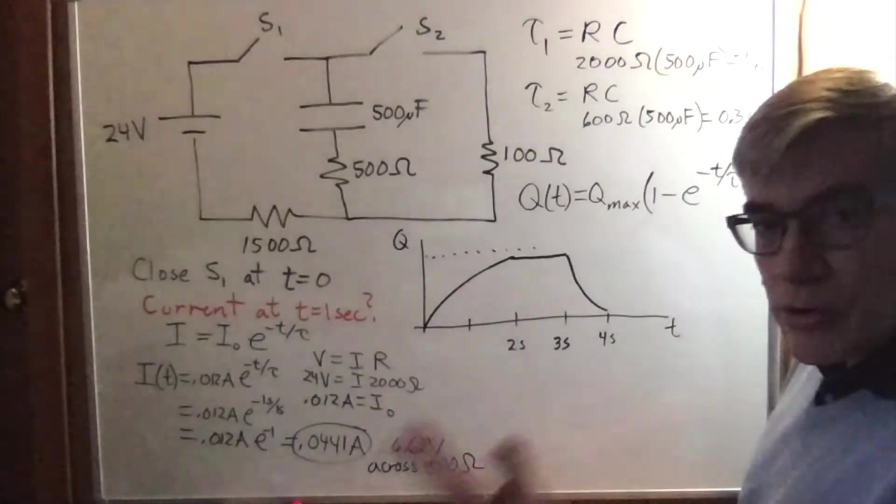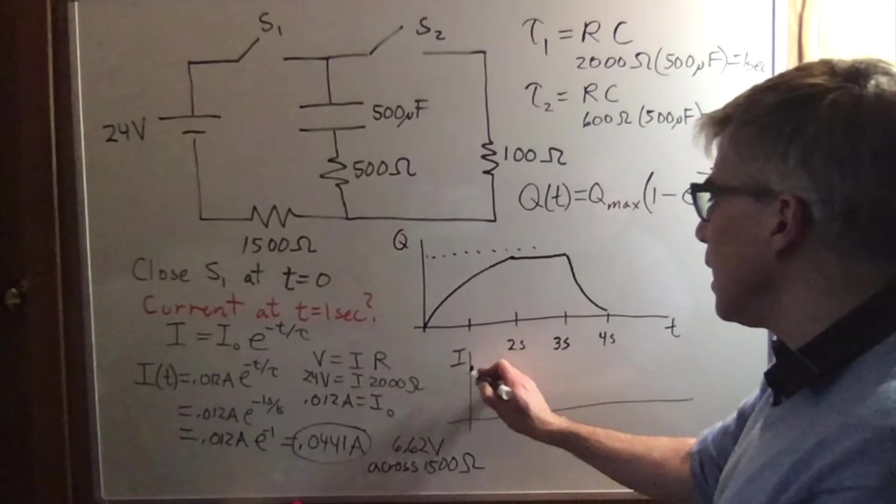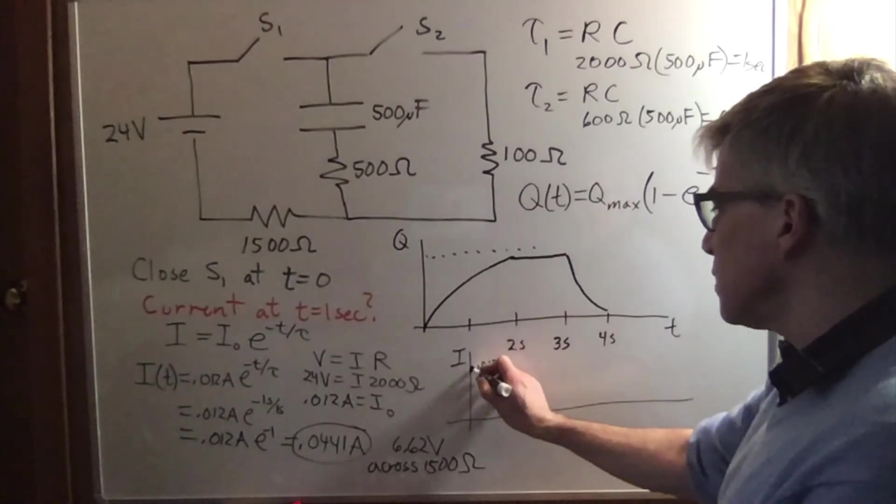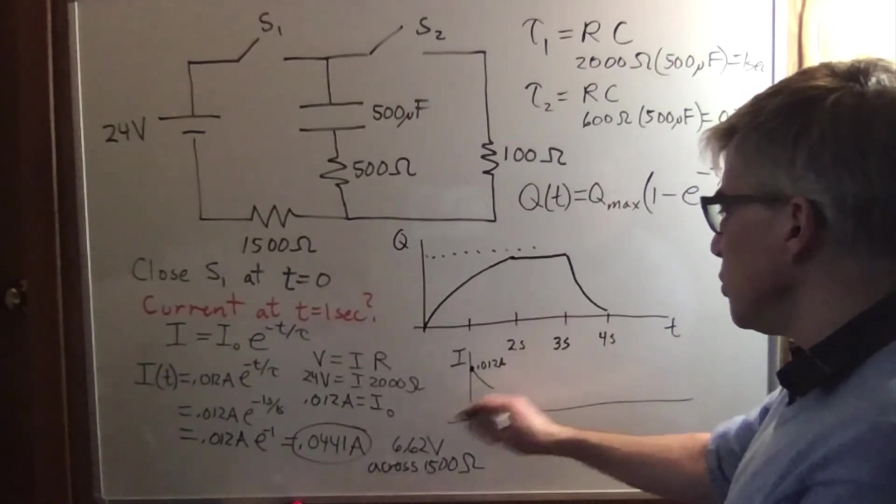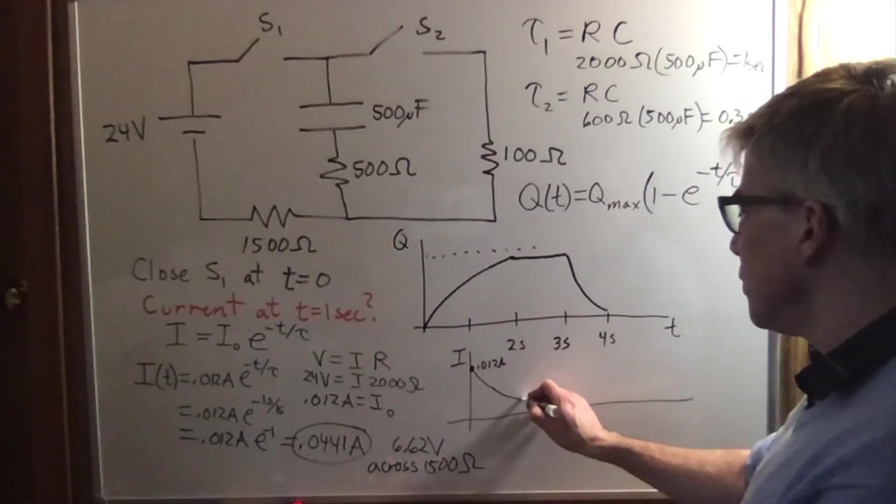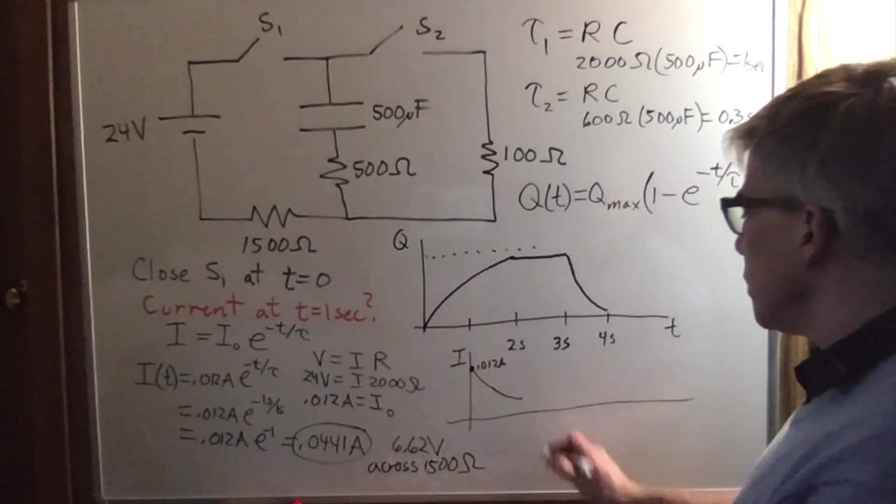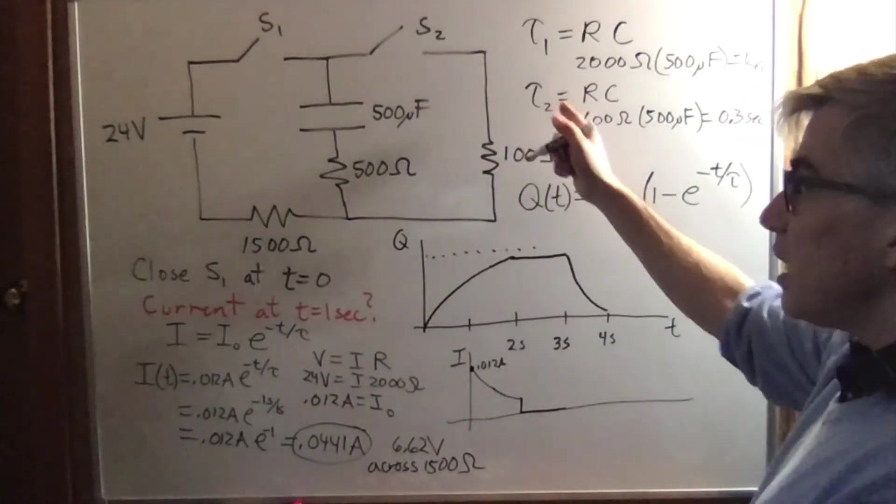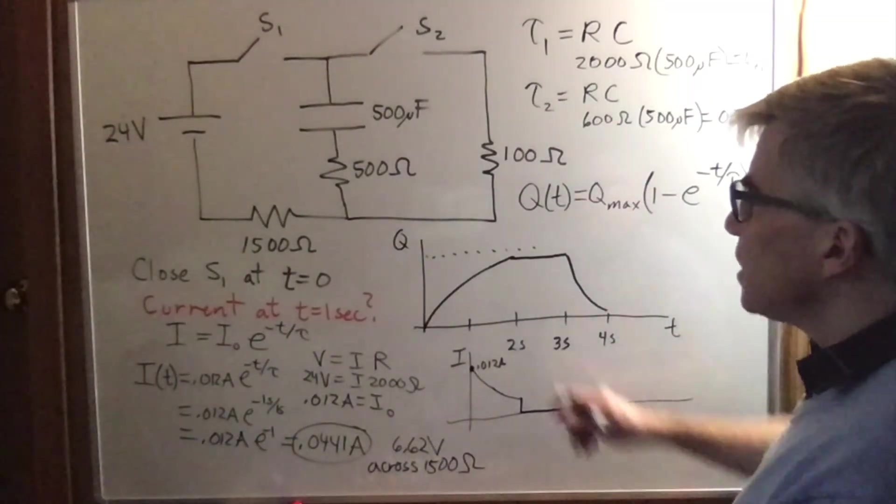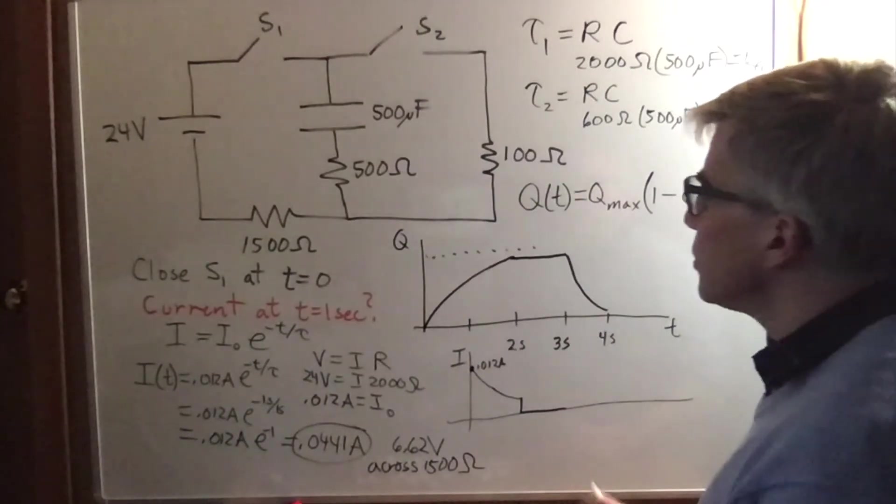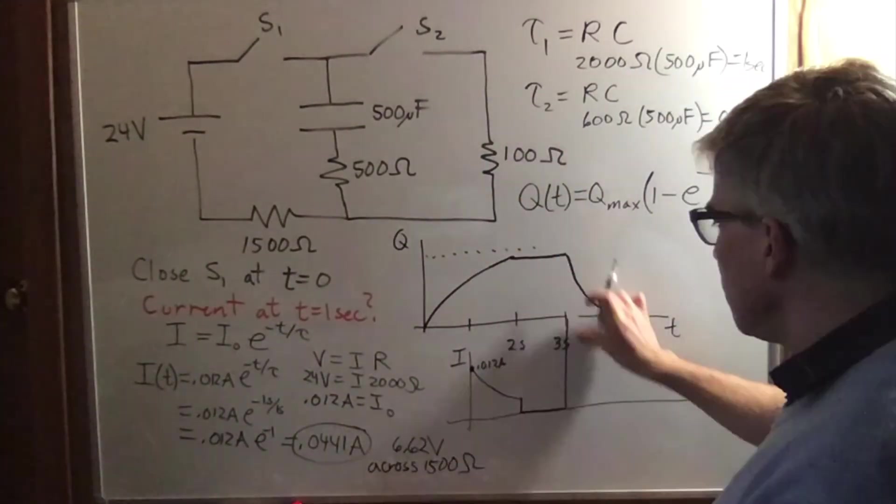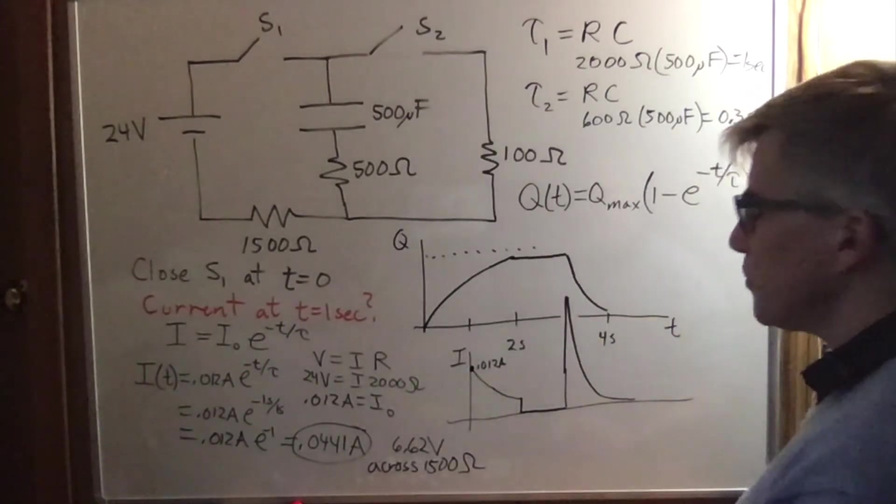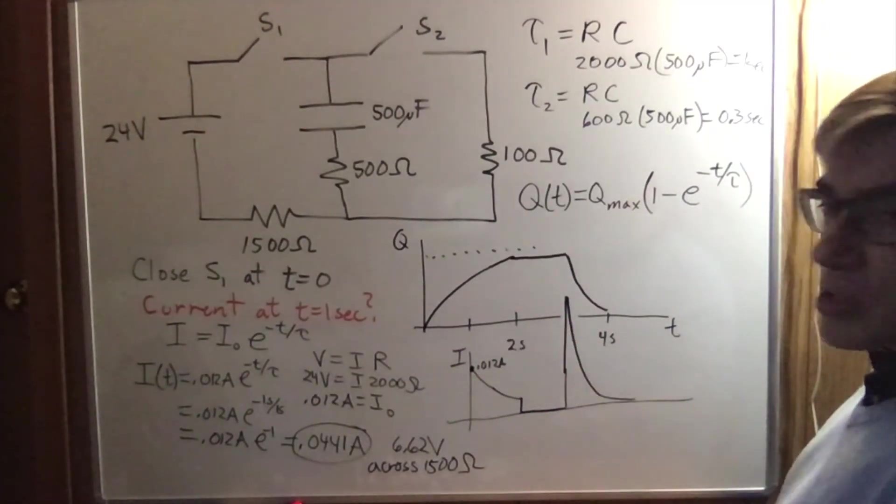If we were trying to plot the current, well the current will always start out high and start dropping off like 0.012 amps is its maximum. It would drop off to 0.04 and then keep dropping off. And then when we open the switch the current immediately drops to zero. And then at three seconds we start getting a current going the other way coming off of the capacitor. With the same given charge, the same voltage on the capacitor, a smaller resistance will mean a bigger current. We'd get a larger discharge, but it would drop off much faster. So that's roughly what the current would look like as a function of time.